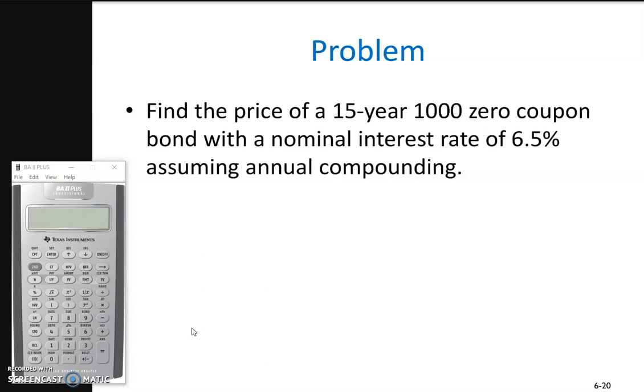If you recall, the nominal interest rate cannot be used for calculation on the timeline. It needs to be converted to the periodic interest rate. The periodic interest rate is equal to I_nominal divided by m, where m is the number of compounding periods.